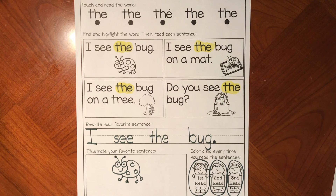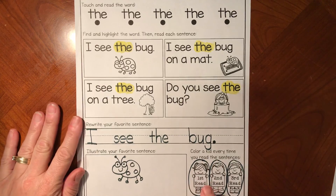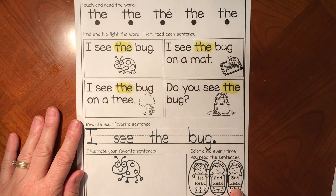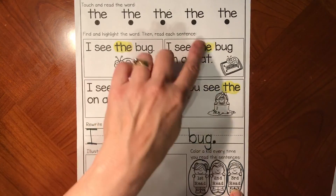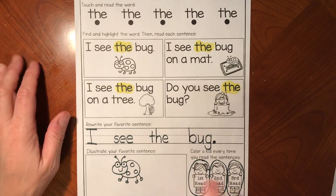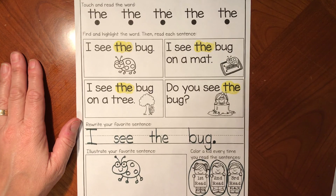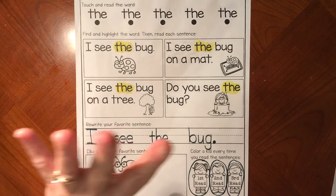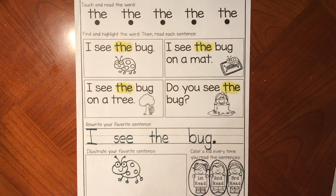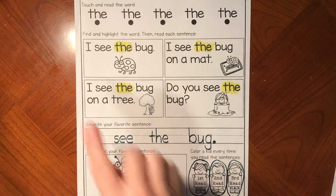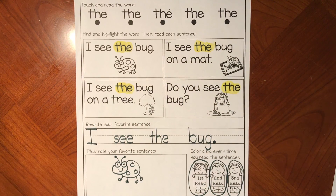Now whatever picture you choose, that's what you need to illustrate. What we want you to do is read three times on your own — make sure you highlight the word 'the' too. Write your favorite sentence and draw your picture. Then you're going to do a bonus fourth read on Seesaw and read the sentences to us. We cannot wait to hear it.